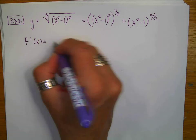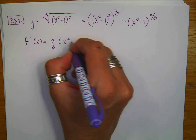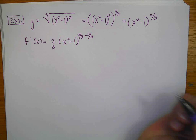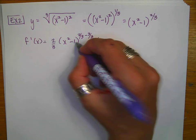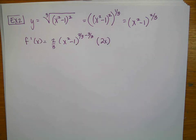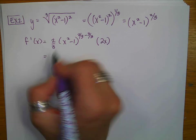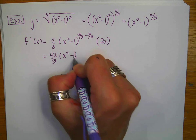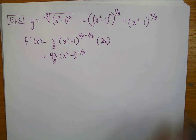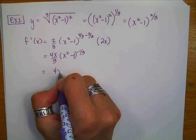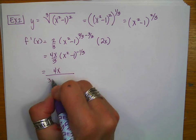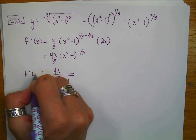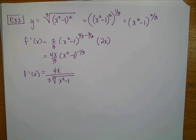Taking the derivative: the two-thirds comes out front, what starts inside stays inside, and the exponent becomes two-thirds minus 1, which is negative one-third. Then I multiply by the derivative of the inside, which is 2x. Cleaning that up gives 4x over 3 times x squared minus 1 to the negative one-third, which simplifies to 4x in the numerator over 3 times the cube root of x squared minus 1.